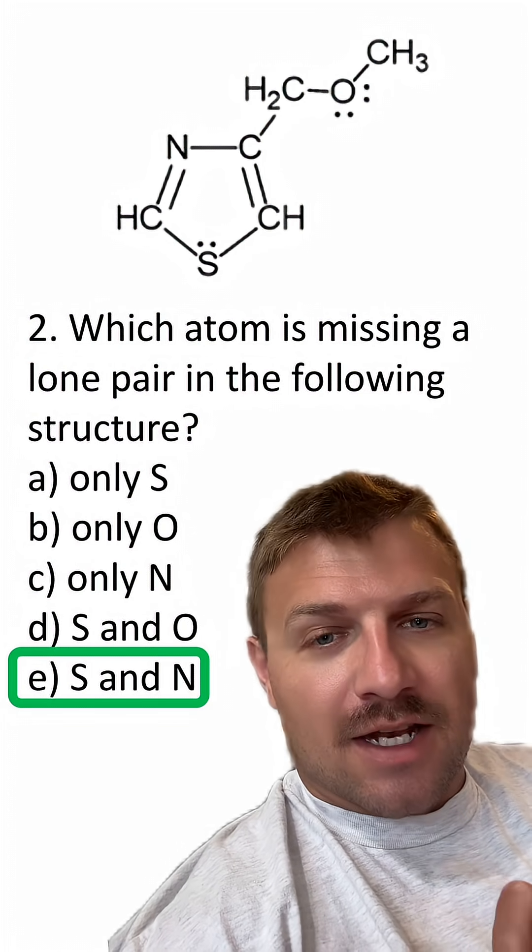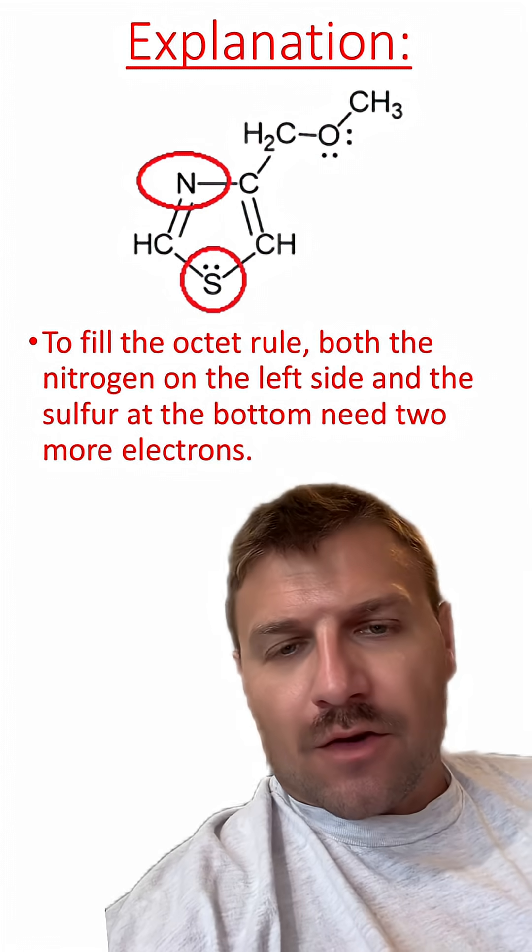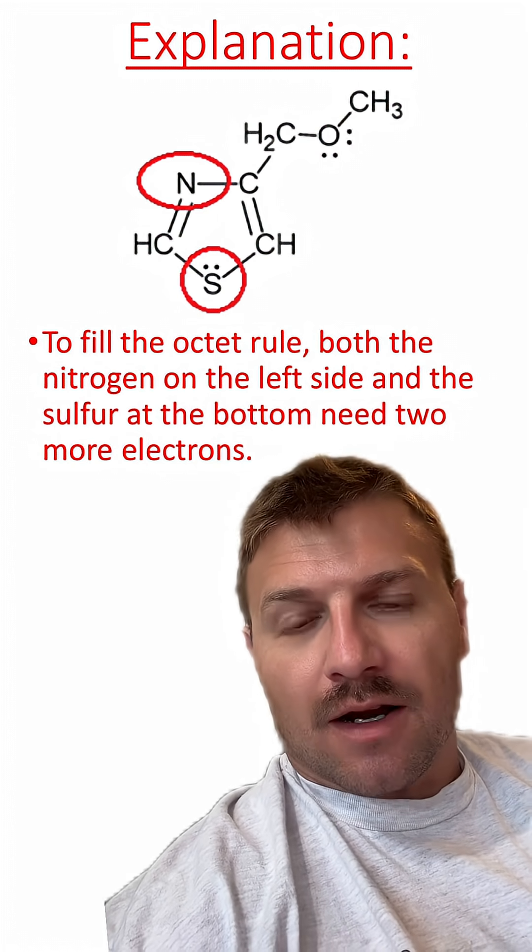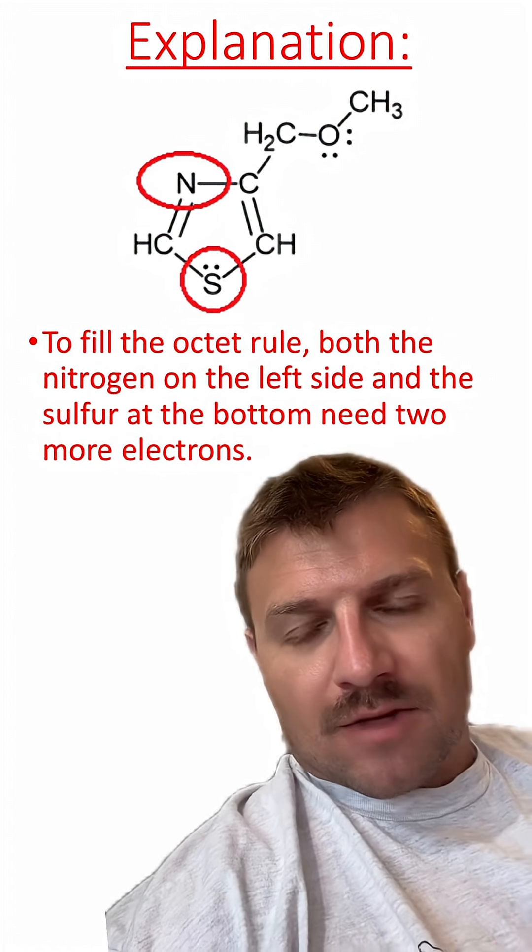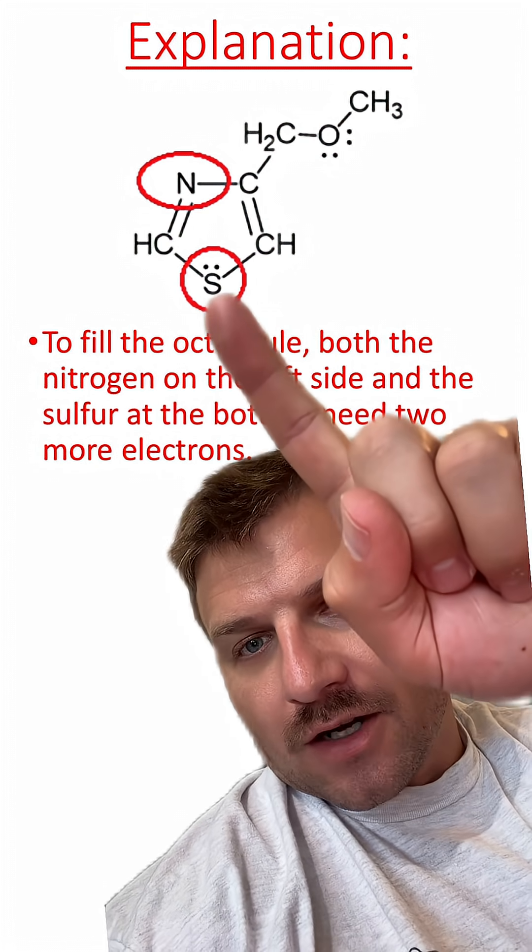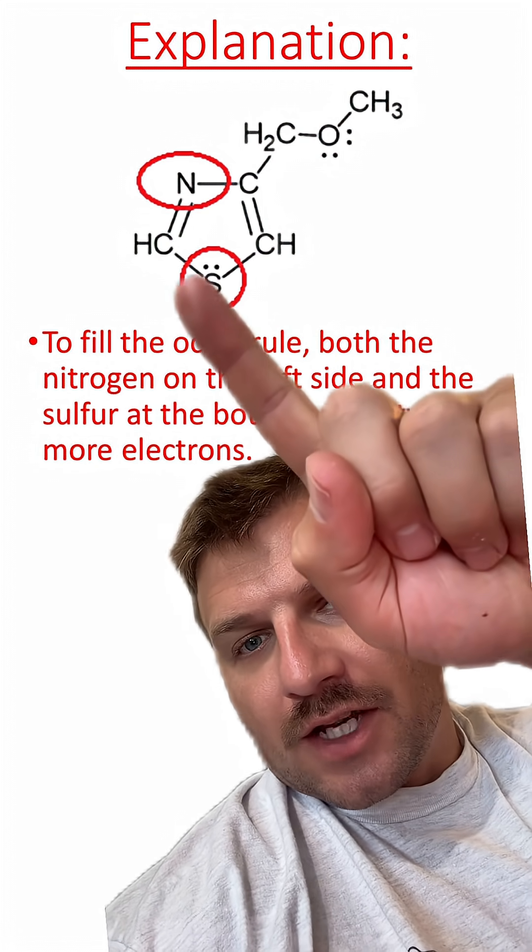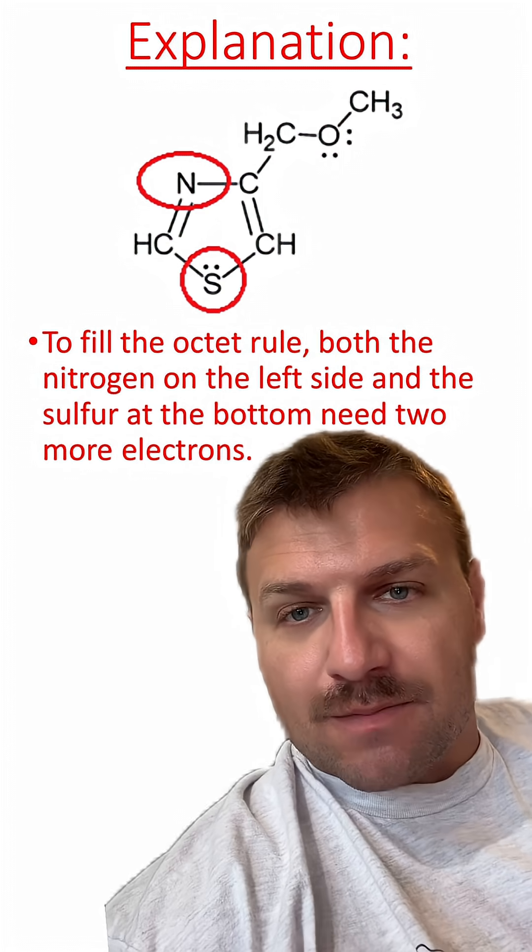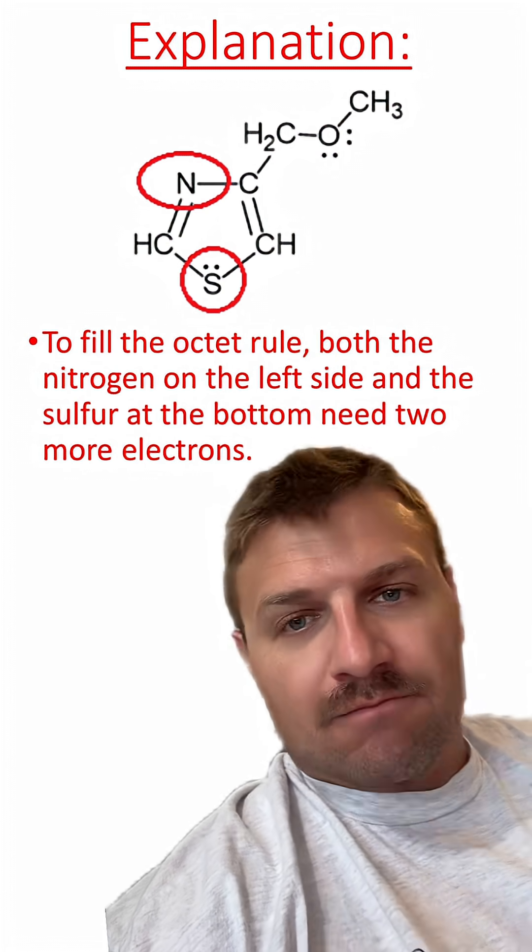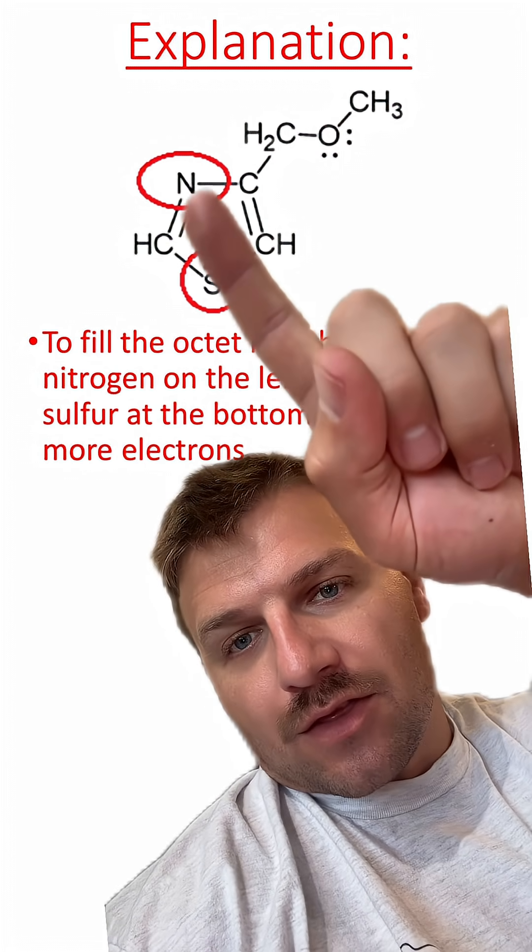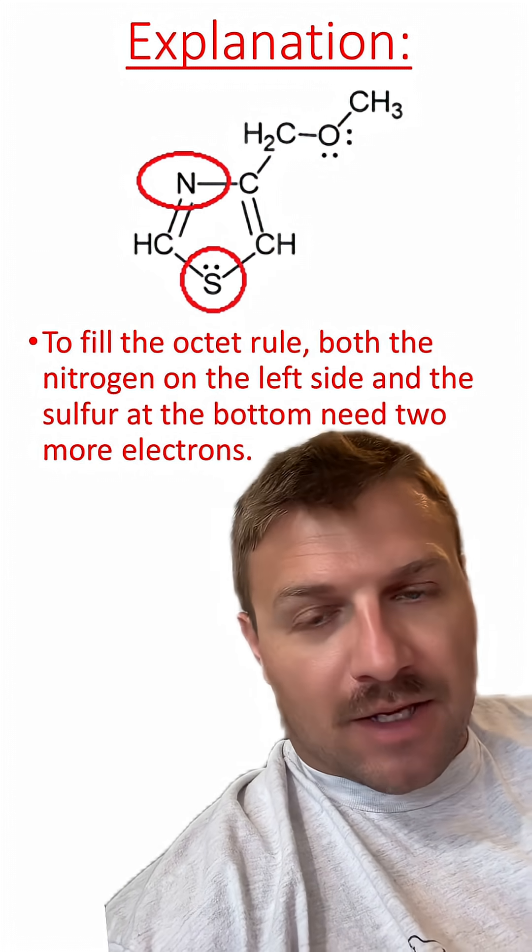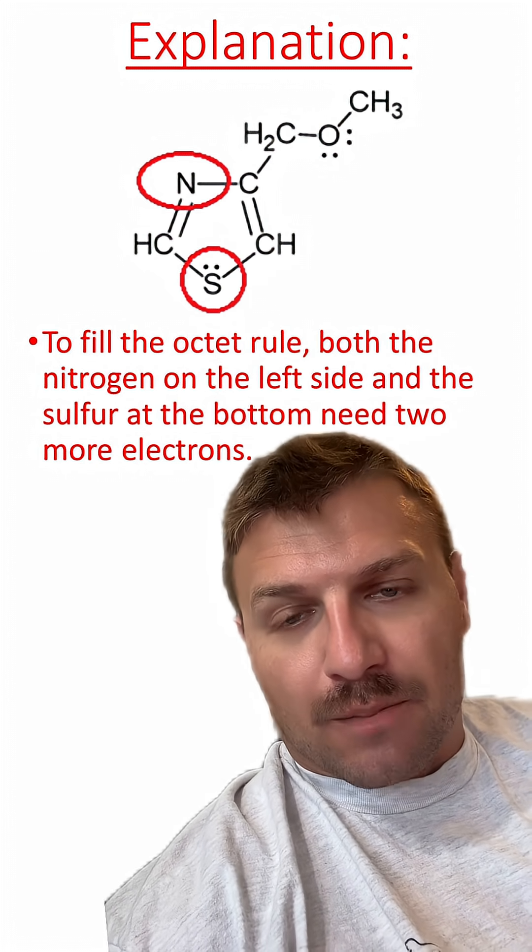Both sulfur and nitrogen need another lone pair. To fill the octet rule, both sulfur and nitrogen are going to have to have another pair of lone electrons. This is because, for example, sulfur here only has six, two for each of the bonds here, and then two from this lone pair. It needs eight, so it's missing a pair of electrons. Same here with nitrogen, where there's only three covalent bonds that represent six electrons. That means the nitrogen needs another lone pair of electrons.